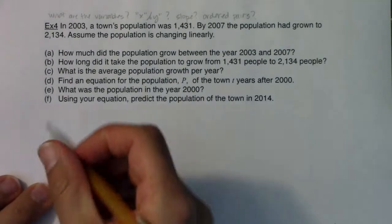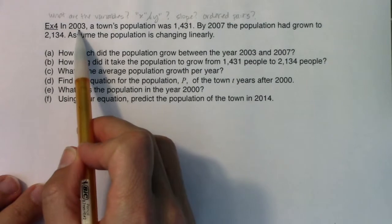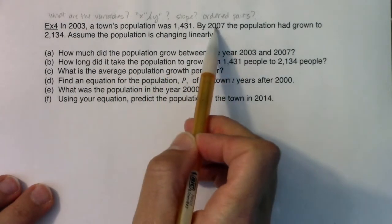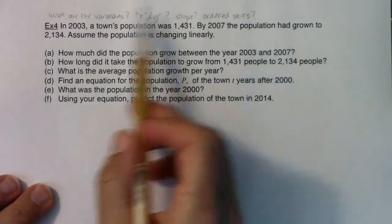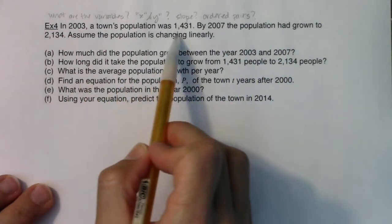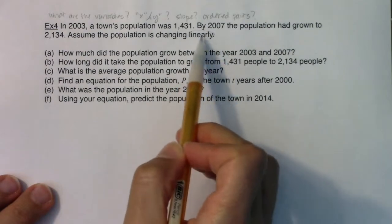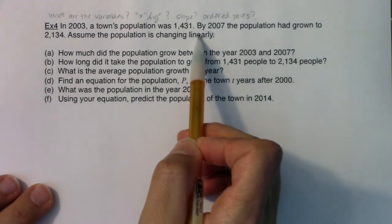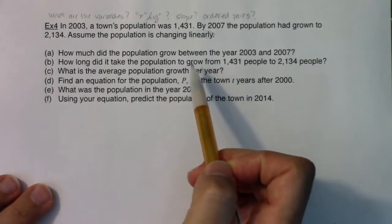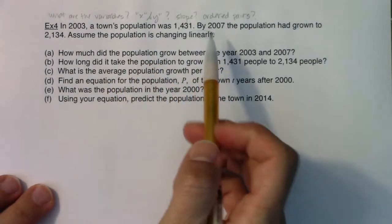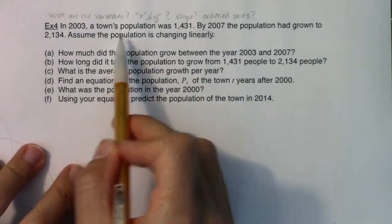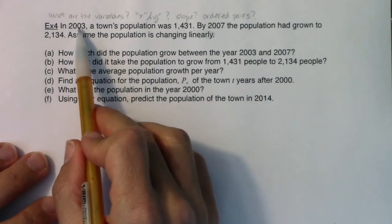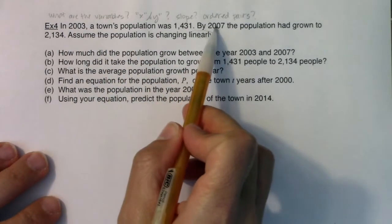Let's see what we have here. In 2003, a town's population was 1,431. By 2007, the population had grown to 2,134. Assume the population is changing linearly. So there's my clue. If it's changing linearly, I want to find Y equals MX plus B. What is changing? It's a population and the year is changing. I went from 2003 to 2007, and the population changed from 1,431 to 2,134.